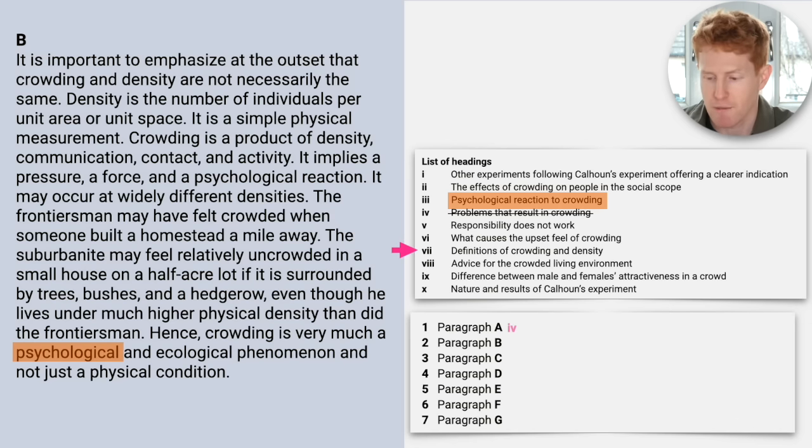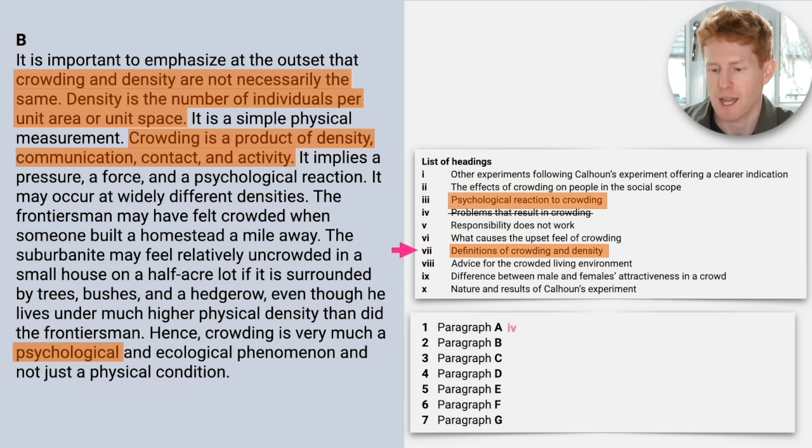Now when I see heading seven, something also clicks. Definitions of crowding and density. Well, in the first sentence, it says how crowding and density are not the same, and then there's mention of density, and there's mention of crowding. So that could be the answer. Let's look at the other possibilities. Okay, I think it's between these two. Which one do you think it is?